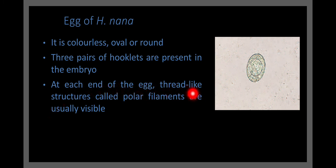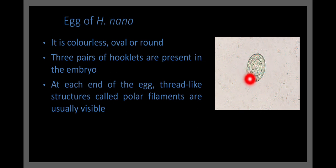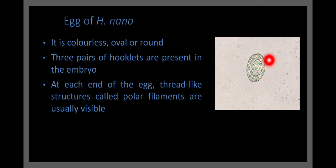At each end of the egg, thread-like structures called polar filaments are usually visible. These filaments start from both poles of the egg and extend toward and around the embryo, covering it from both sides. These are known as polar filaments and are visible at both poles of the H. nana egg.